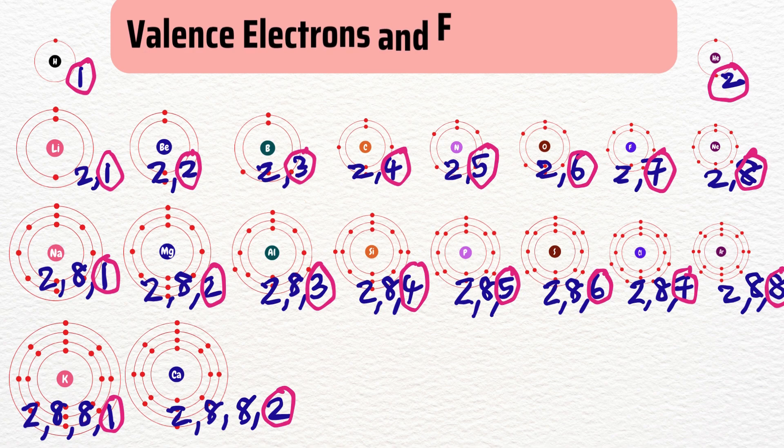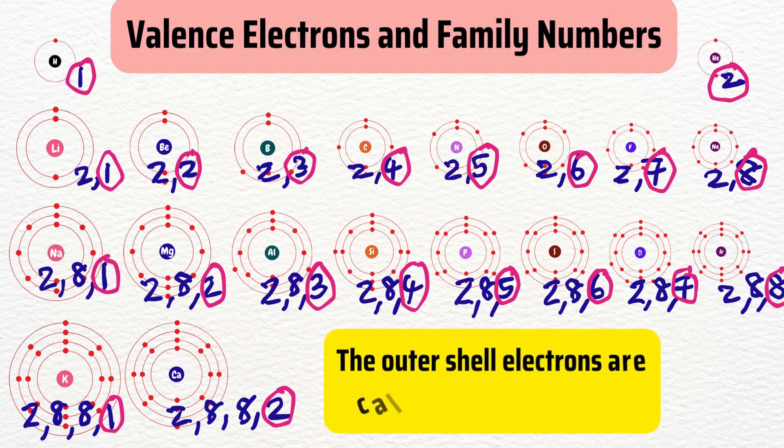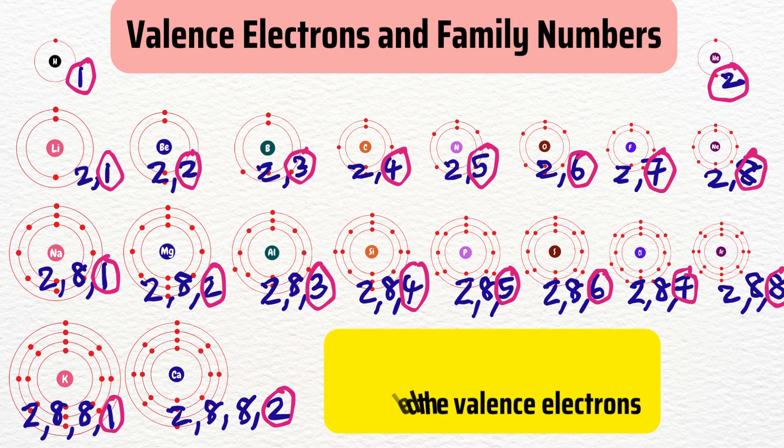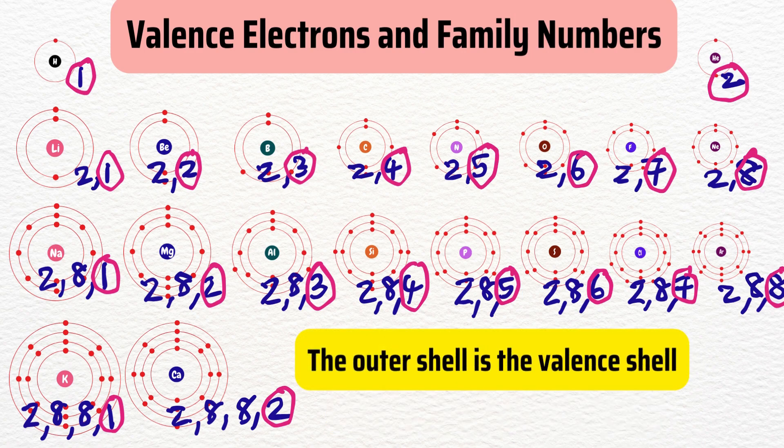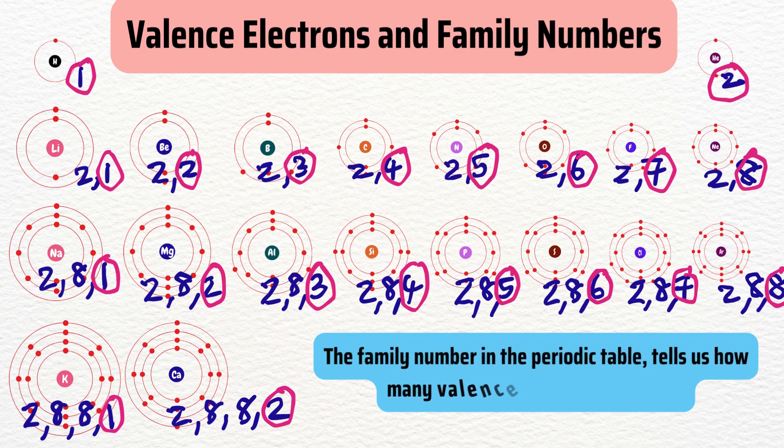In this table we see that elements in the same family have the same number of outer shell electrons which I have circled. The outer shell electrons are called the valence electrons and the outer shell is called the valence shell. The family number in the periodic table tells us how many valence electrons an atom has.